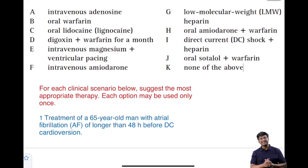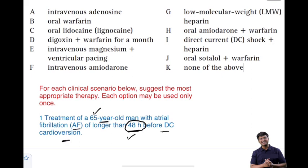Starting with the first important clinical scenario: the treatment of a 65-year-old man with atrial fibrillation of longer than 48 hours before DC cardioversion. This point is very important — longer than 48 hours. An individual with atrial fibrillation longer than 48 hours is at risk of thrombus formation within the atria.